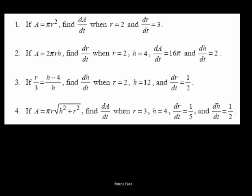In number four we have a formula for area: A = πr√(h² + r²). We are supposed to find the rate of change of the area with respect to time, and then they give us all the other values to plug in for.